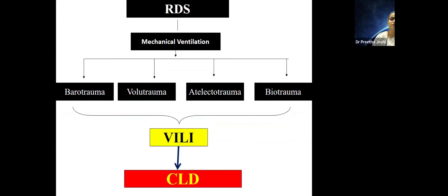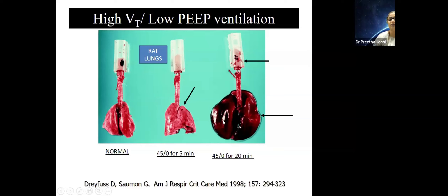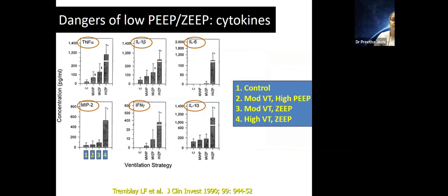Ventilator-induced lung injury adds on to all the other factors causing chronic lung disease. This is a very old experiment from 1998 done on rat lungs. A normal lung is well ventilated and perfused, looking pink. When conventional ventilation was applied — in those days often with zero or low PEEP — as you increase PIP to 45, areas of damage begin to develop and the lung looks less perfused. After 20 minutes, much of the lung is damaged, as we see in children with bronchopulmonary dysplasia.